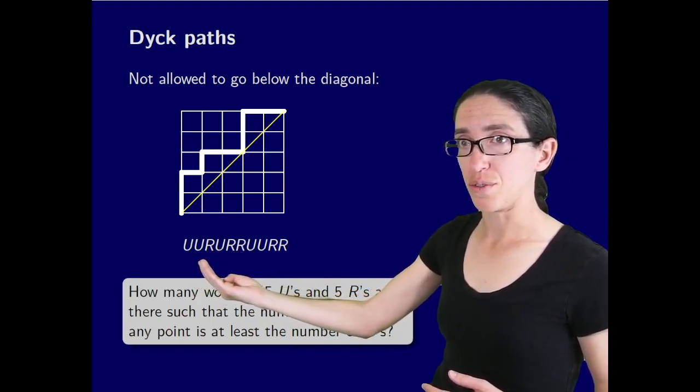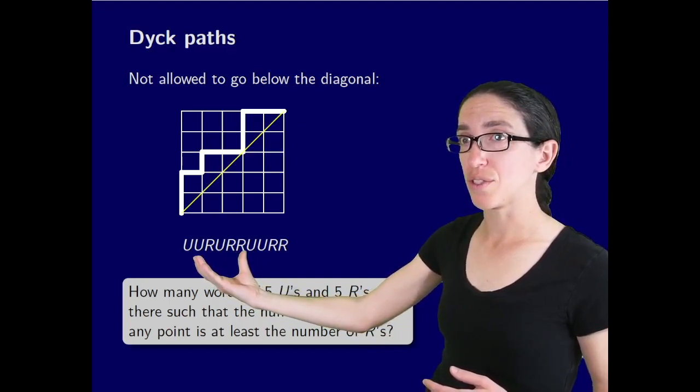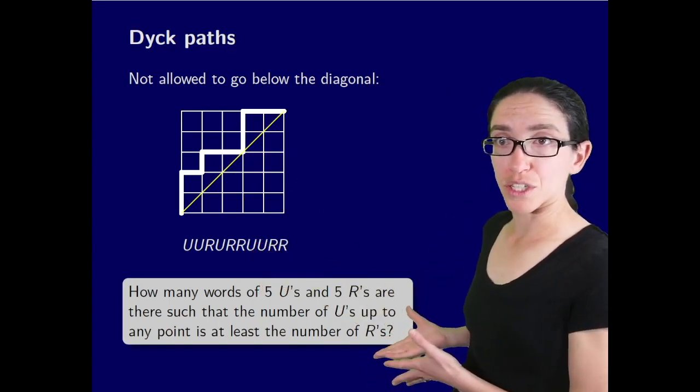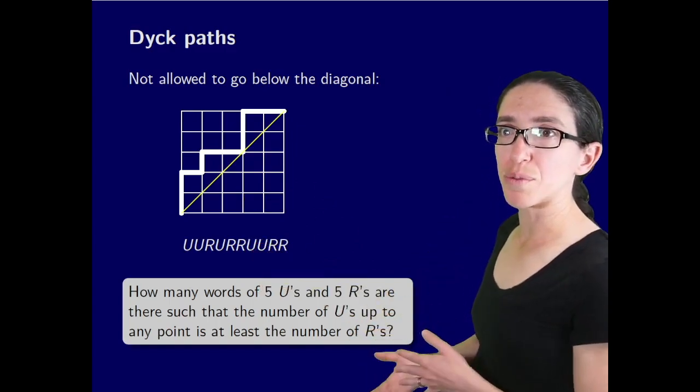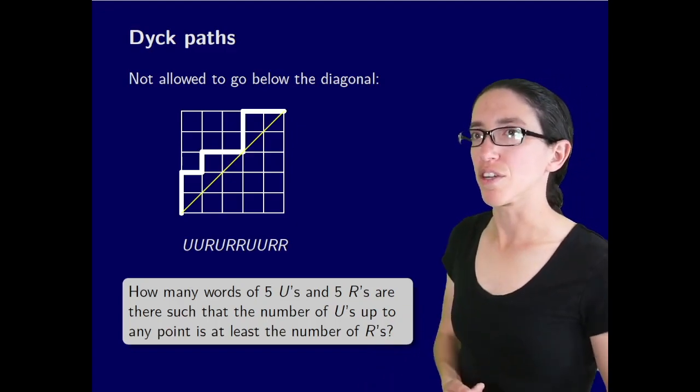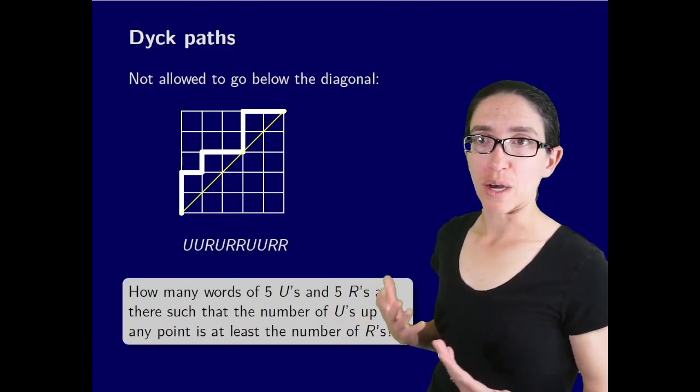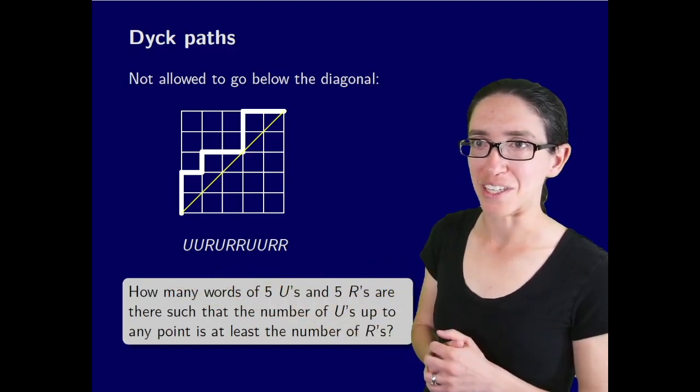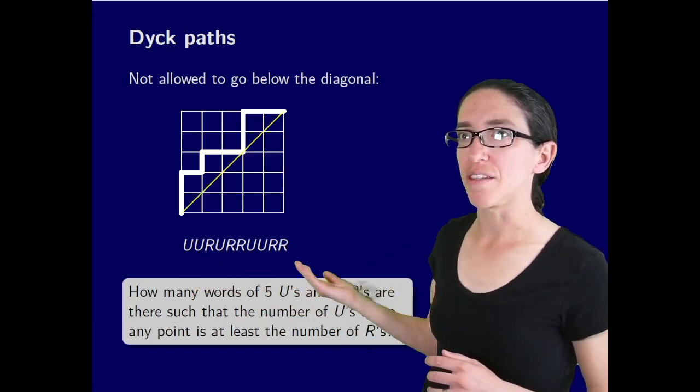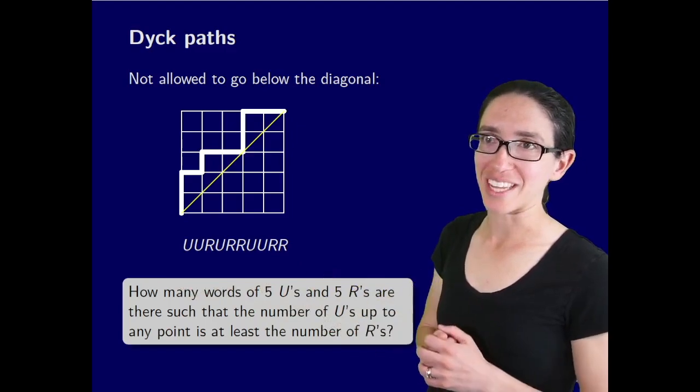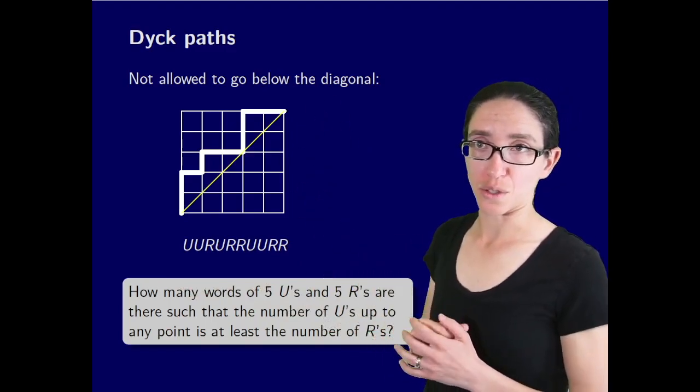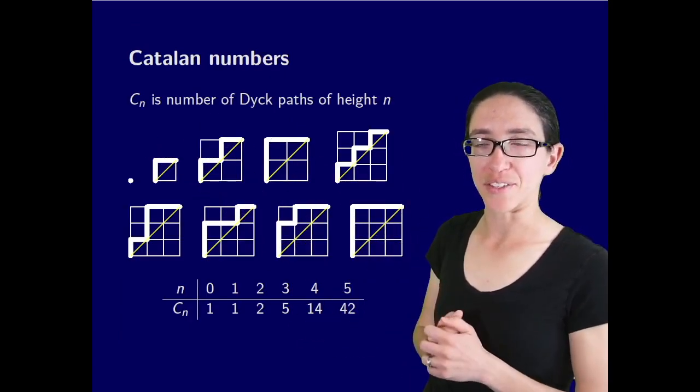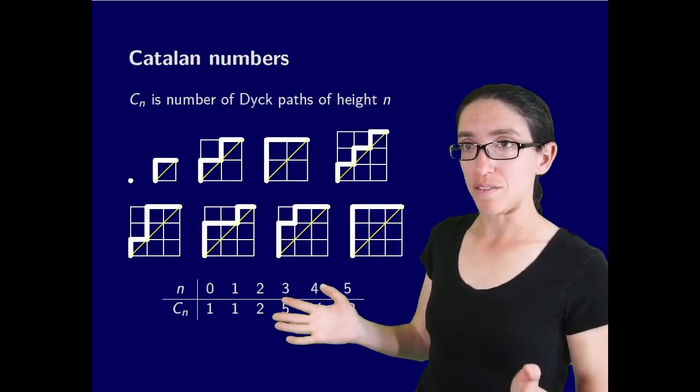Or at most it can tie. For instance UURURR at this point has three U's and three R's. That corresponds to when we hit the diagonal. So then you have to have a U after that. Succinctly we can say how many words of five U's and five R's are there such that the number of U's up to any point is at least the number of R's. This is called a ballot word. These paths are called Dyck paths. So the Catalan number C sub n is the number of Dyck paths of height n or the number of ballot sequences of U's and R's of length 2n.